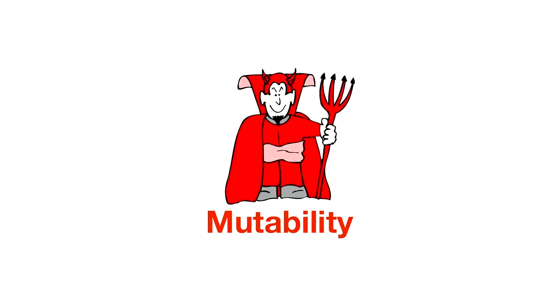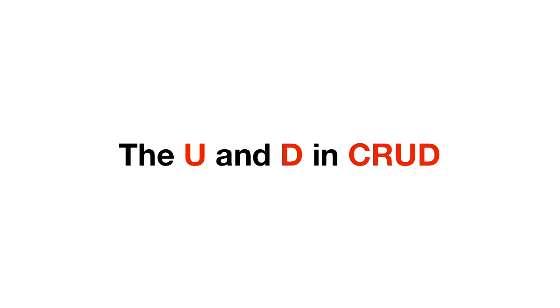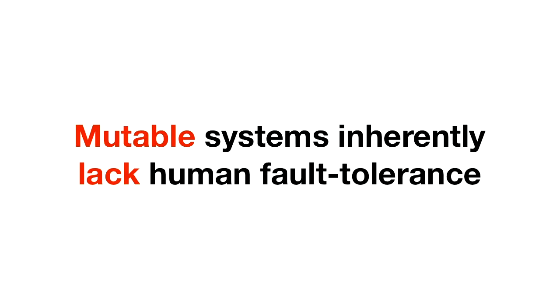And this brings us to the topic of mutability. Mutability is the U and D in CRUD — the updates and deletes in the four standard database operations of create, read, update, delete. Mutable systems inherently lack human fault tolerance, because at a fundamental level the system is always modifying and deleting data. So any mistake could delete or corrupt data in an arbitrary fashion — I've experienced it, and I'm sure most people here have experienced that as well.